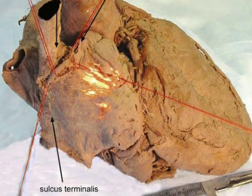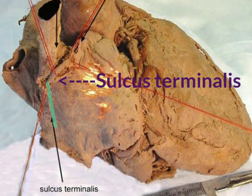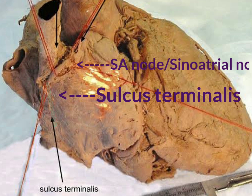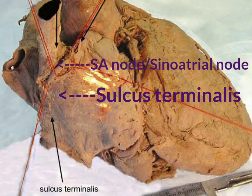The right border of the atrium, from the superior vena cava to the inferior vena cava, contains a groove called the sulcus terminalis. The upper part of this sulcus terminalis contains a conducting node called the SA node, which is also known as the pacemaker of the heart.